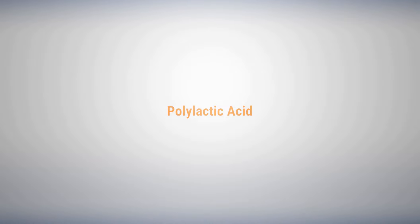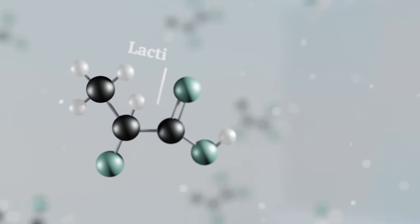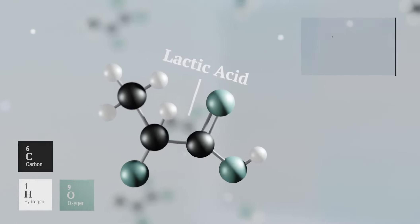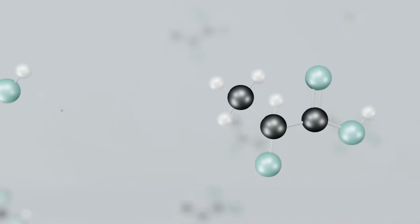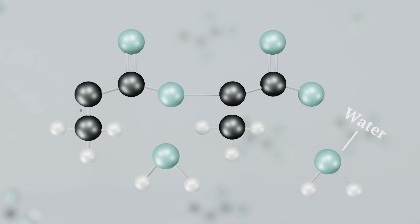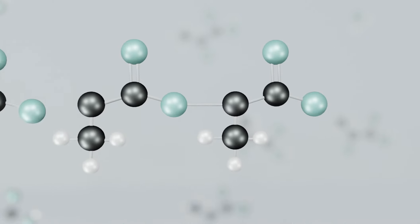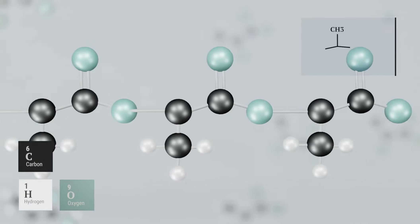There are many types of biodegradable plastics, but let's take a look at a more common one, which is polylactic acid. Polylactic acid is made of lactic acid monomers, which are obtained from fermented plant starch from corn. This is done through the direct condensation of multiple lactic acids, which release water as a by-product.